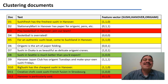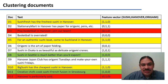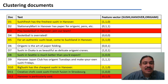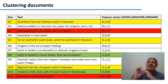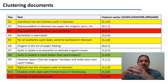Welcome back. This is what we have when we describe every document with its feature system. The yellow documents all have the same features, the red documents all have the same features, and the green documents all have the same features. The green ones all have 1,0,0 — they talk about sushi but not Hanover or origami. For example, 'Sushi in Seattle, it's much better than you'd expect' and 'Creative chefs cook sushi French fusion in Strasbourg.' Because these share the same features, 1,0,0, we can say they are the same in this feature system and form a natural cluster.